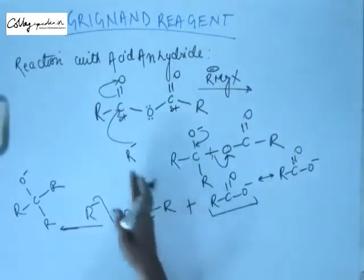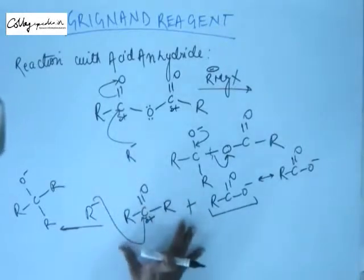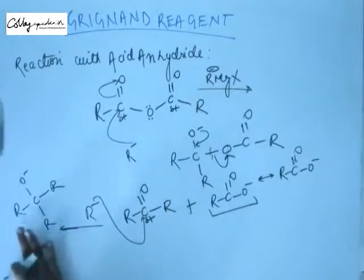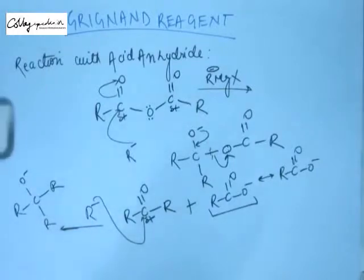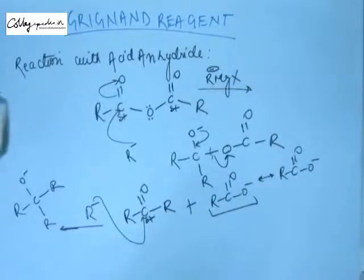When they consume the first equivalent they form a ketone in all three cases, and when they consume the second equivalent the reaction stops at the stage of alcohol. So the final product of all three acid derivatives — except amides — will be alcohol. So these are the reactions with acid derivatives.